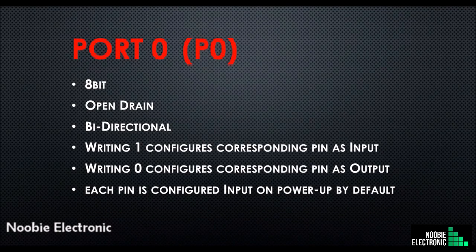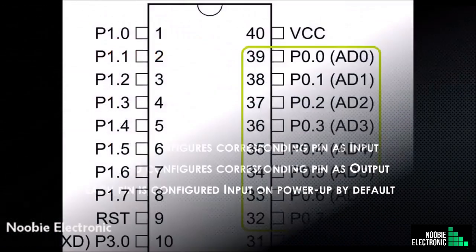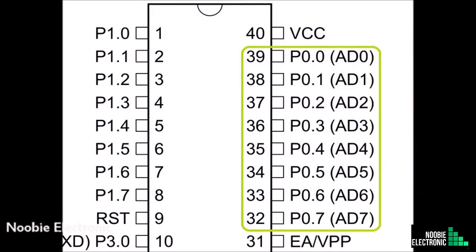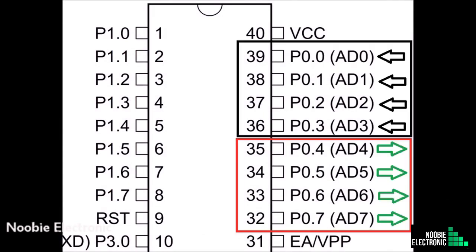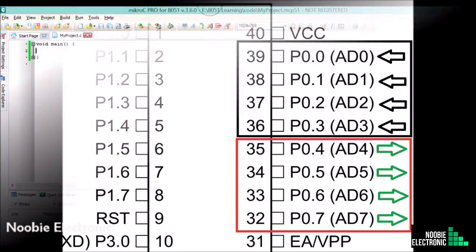Let's write some simple code for testing port 0. I'll configure the lower 4 bits of port 0 as input and the upper 4 bits as output. Whatever input I apply on the lower 4 bits, the same should appear on the upper 4 bits.